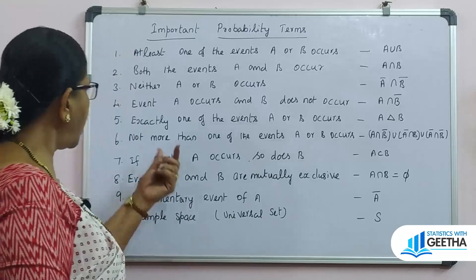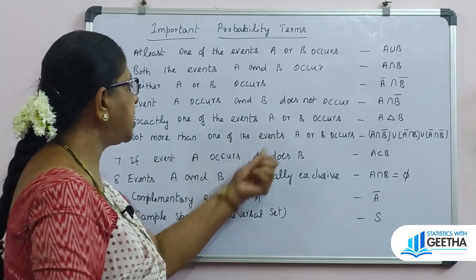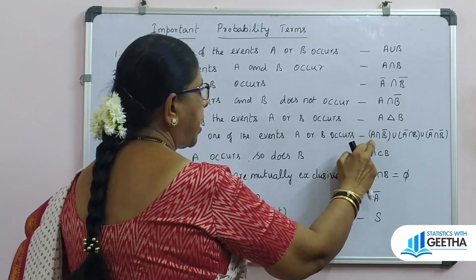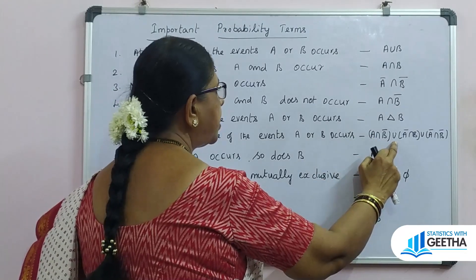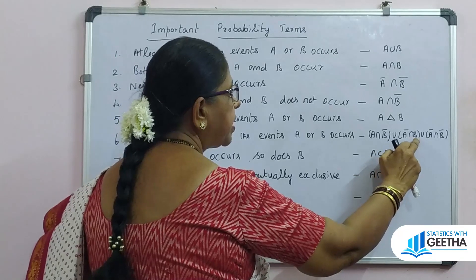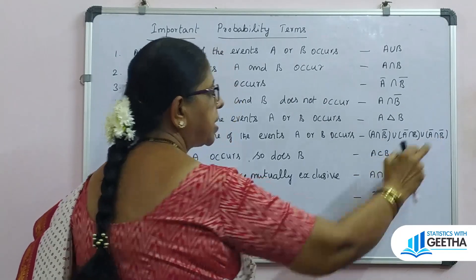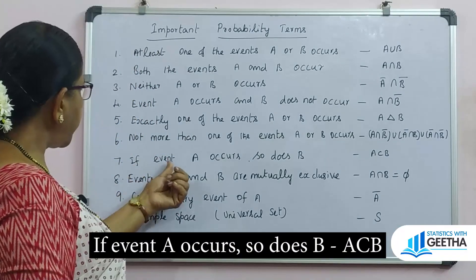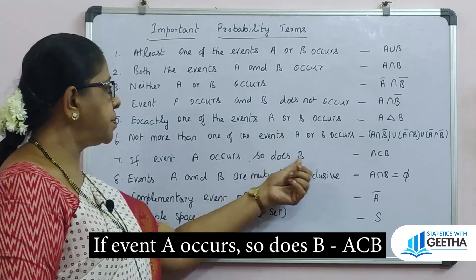At least one of the events A, B, or C occurs can be written using union. The set notation involves: A intersection B complement, union, A complement intersection B complement, and union with A complement intersection B. If the event A occurs, so does B — expressed as A intersection B complement equals the empty set, or equivalently A is a subset of B.